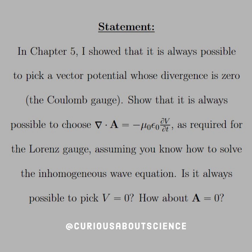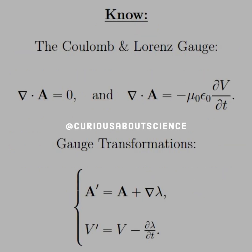Assuming that you know how to solve the inhomogeneous wave equation. Is it always possible to pick V equals zero? How about A equals zero?